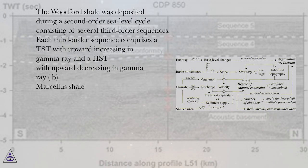The Woodford shale was deposited during a second-order sea-level cycle consisting of several third-order sequences. Each third-order sequence comprises a TST with upward increasing gamma-ray and a HST with upward decreasing gamma-ray.